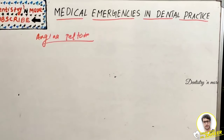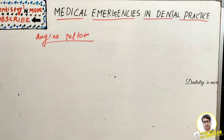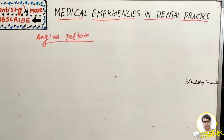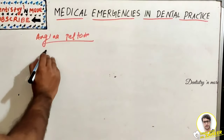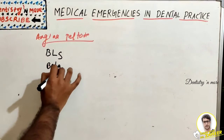Angina pectoris is a condition marked by severe chest pain, often spreading to the shoulders, arms, and neck, due to inadequate blood supply to the heart. Types include stable, variant, and unstable angina. Prevention involves stress reduction, patient reassurance, and psychosedation. Management: recognize the problem, discontinue dental treatment, activate emergency services, position the patient upright comfortably, assess and perform BLS, then start definitive management using beta blockers.